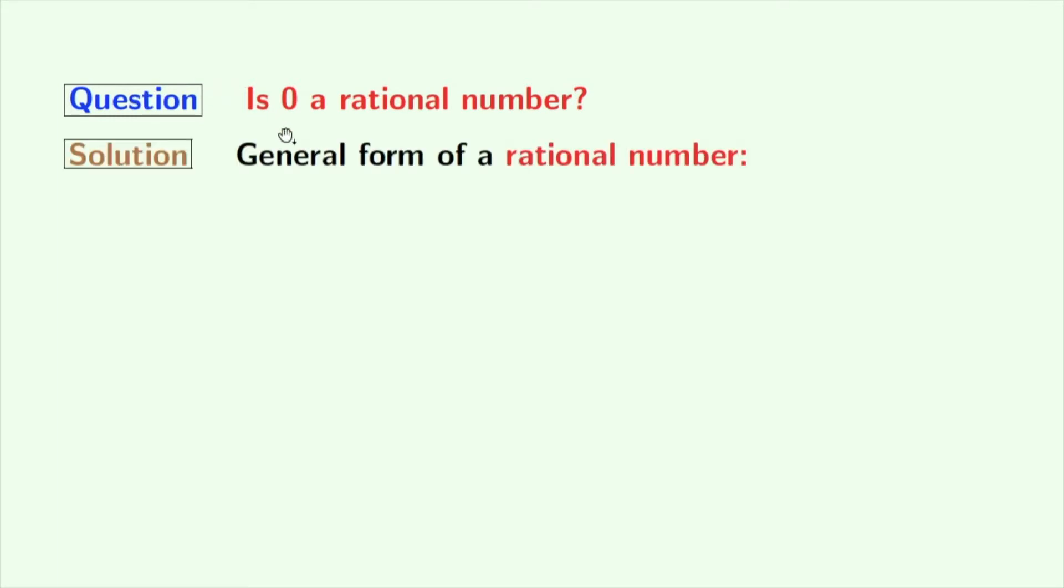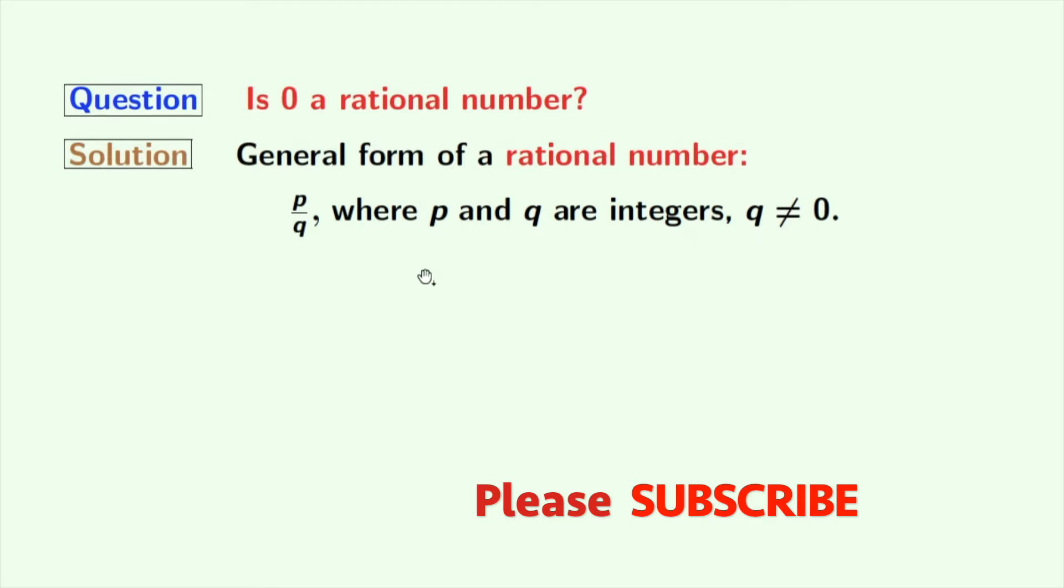Firstly, we will learn about the general form of a rational number. A rational number is of the form P by Q, where P and Q are integers and Q is non-zero.